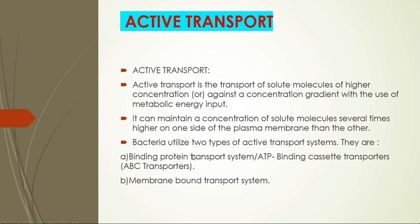Bacteria normally utilize two different active transport systems to take up nutrients. The first is the binding protein transport system, also called the ATP binding cassette system, or simply ABC — where A indicates ATP, B indicates binding, and C indicates cassette. The second type is the membrane-bound transport system. We will discuss both of these now.